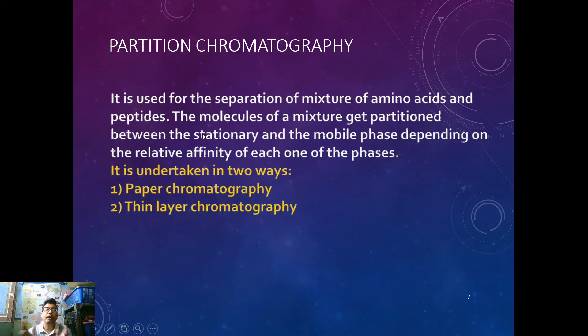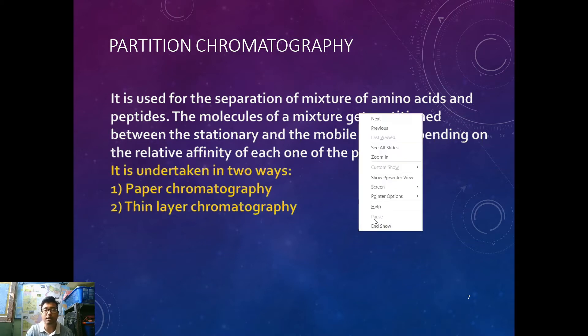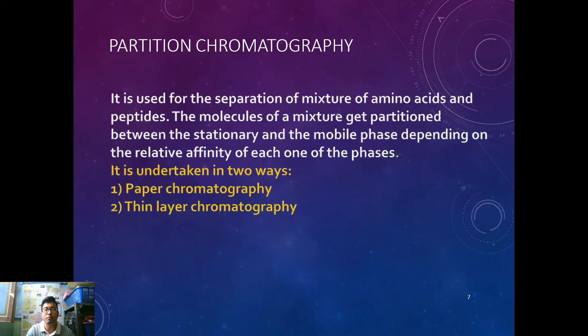Now as you know, the main use of partition chromatography is to separate a mixture of amino acids and peptides. This is the main answer that is expected from you all. Separation of mixture of amino acids and peptides. If it comes as an MCQ, you need to click partition chromatography or any of the options of partition chromatography.